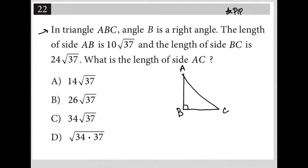So in triangle ABC, angle B is a right angle. The length of side AB is 10 root 37, so I'm going to label that as 10 square root 37. And the length of side BC is 24 square root 37, so I'm going to label that as 24 square root 37. What is the length of AC?